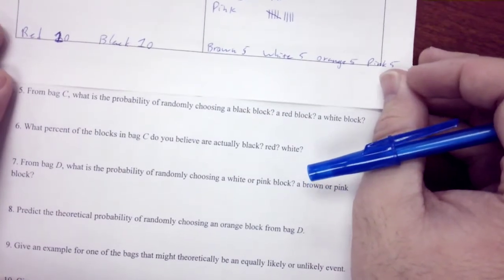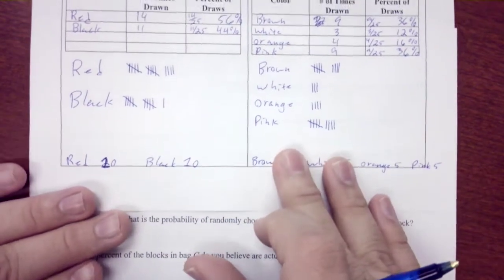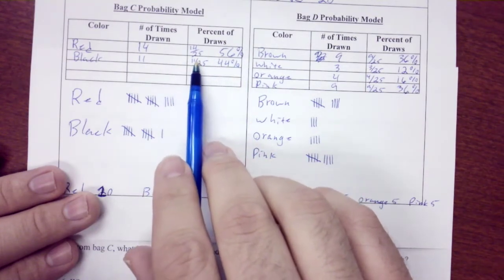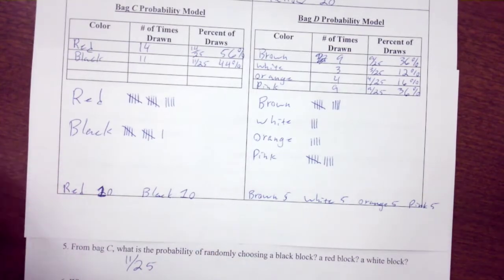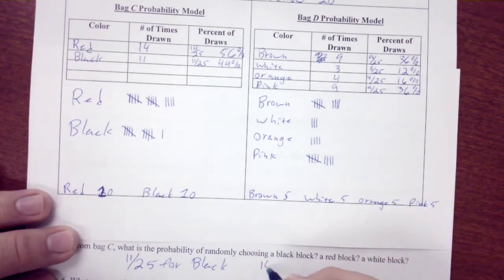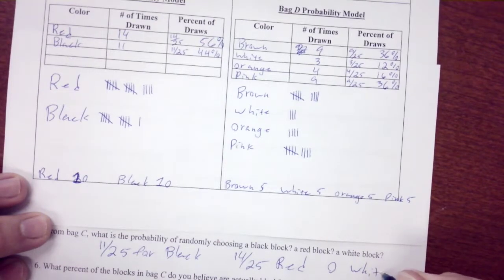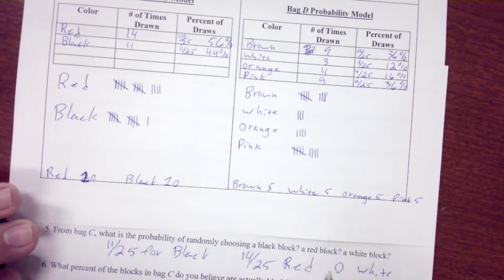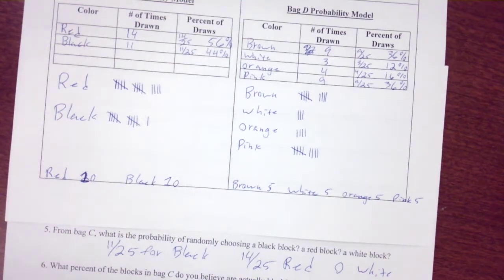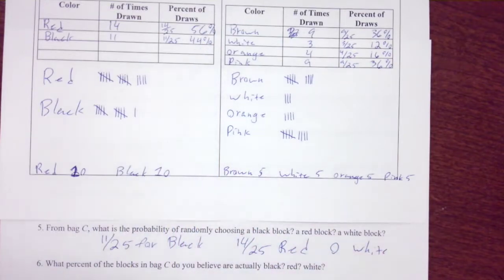From Bag C, what is the probability of randomly choosing a black block? Black is about 44%, or 11 over 25, and red was 14 out of 25, with zero for white. Looking at the actual contents, there were 10 red and 10 black blocks, so our theoretical probability would be one half for each color. Our experimental data showed pretty close to that — the law of large numbers would have evened those out toward 50% each.